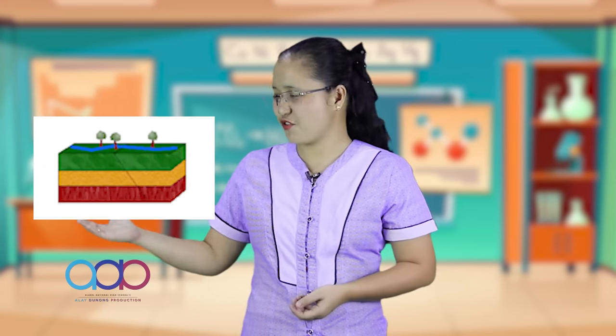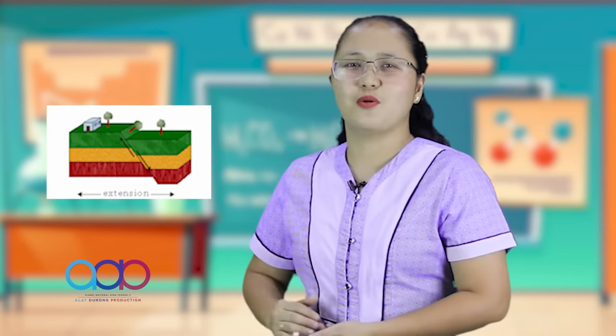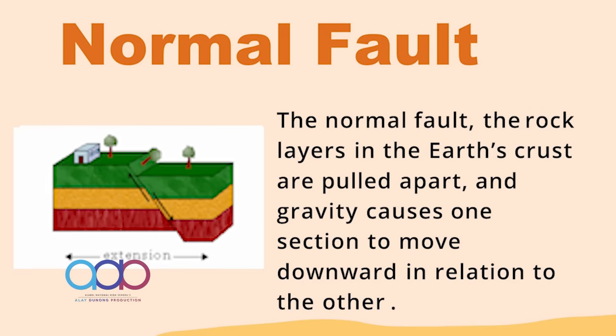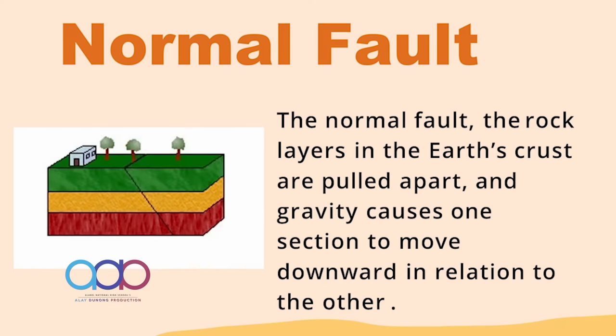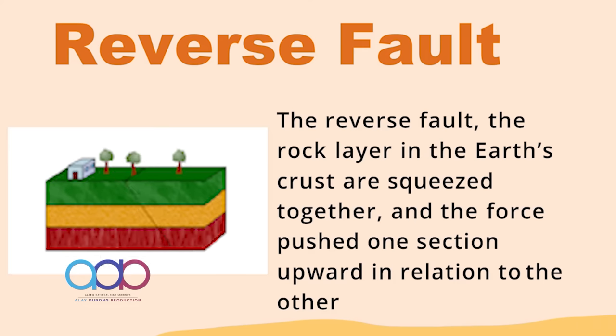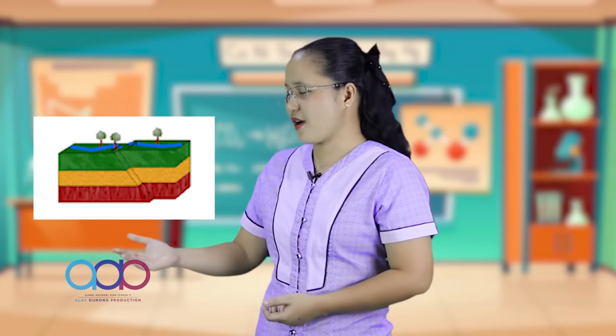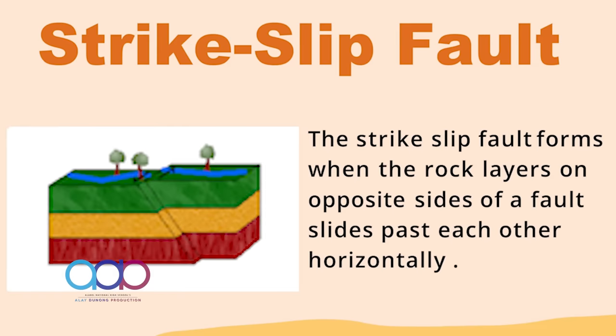There are three types of faults: the normal fault, the reverse fault, and the strike-slip fault. In the normal fault, the rock layers in the Earth's crust are pulled apart and gravity causes one section to move downward in relation to the other. In the reverse fault, the rock layers are squeezed together and the force pushes one section towards the other. The strike-slip fault forms when rock layers on opposite sides of the fault slide past each other horizontally.